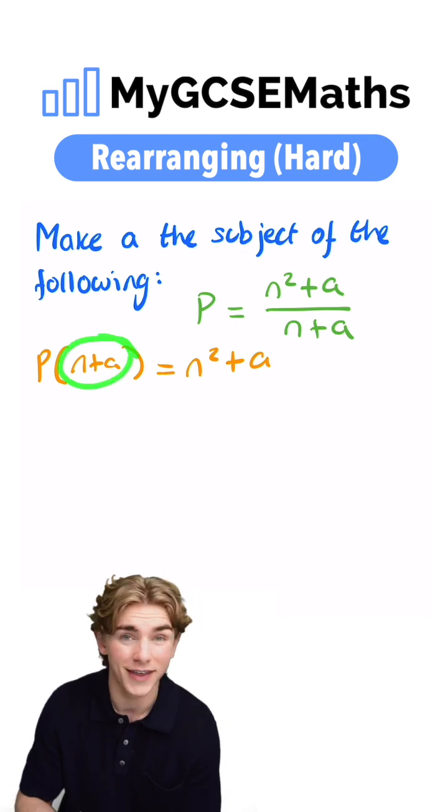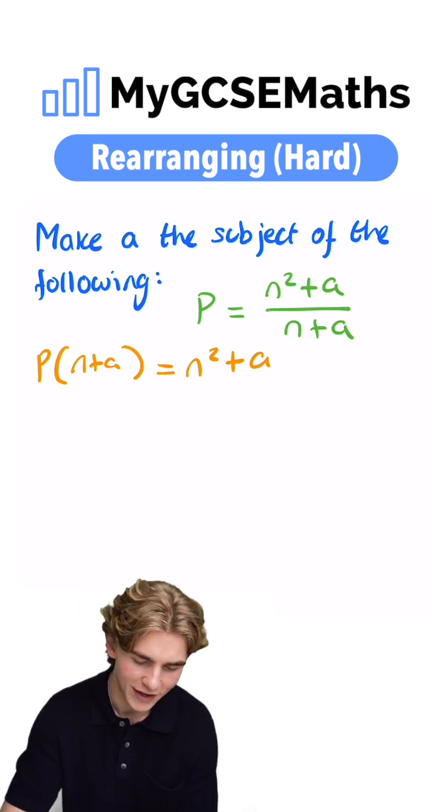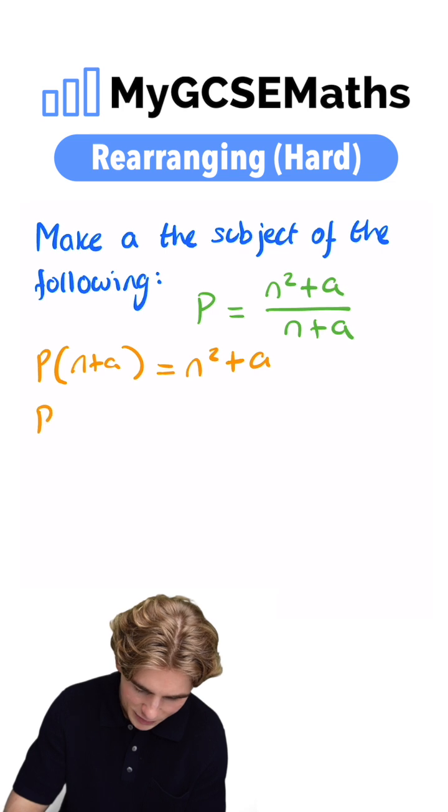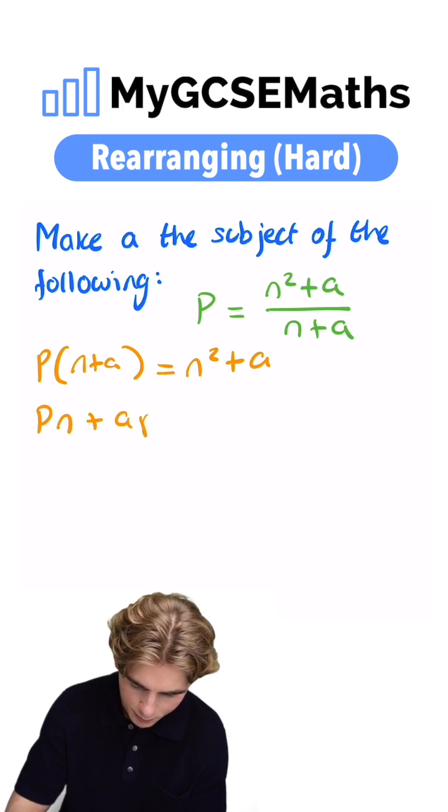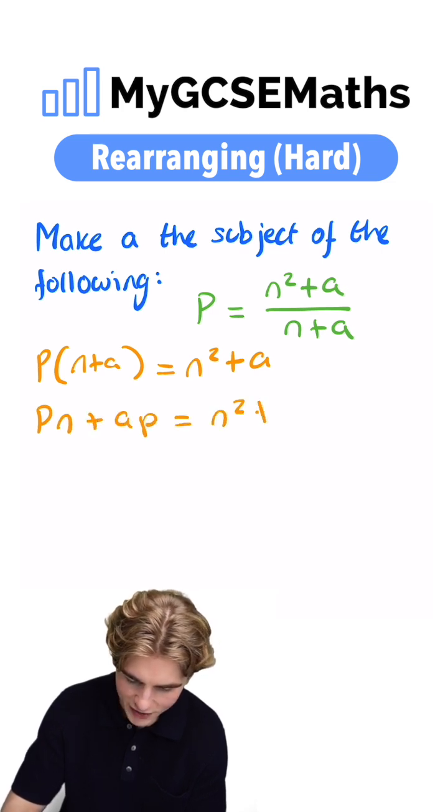Now, we have an A inside a bracket. We don't like that, so let's expand those brackets, simplify this. We're going to get PN plus AP equals N squared plus A.